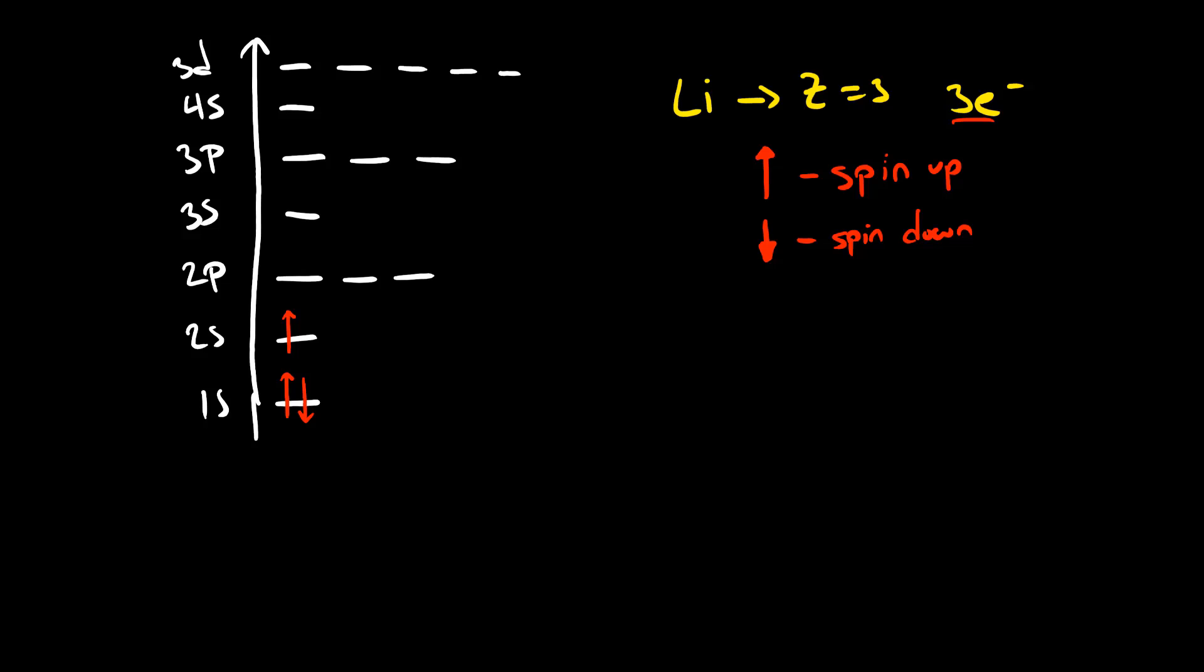The way that we can show this shorthand, so you don't have to draw this entire diagram, is to write out an electron configuration. What we note here is that in our 1s orbital, we have two electrons. In our 2s orbital, we have one electron. This is the electron configuration for lithium: 1s2, 2s1. Two electrons in the 1s orbital, one electron in the 2s orbital.